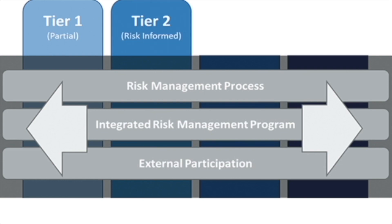Tier 2 is called risk-informed. In that tier, management approves the risk management practices, but there may not be an organization-wide policy. There is awareness of cybersecurity risk at the organization level, but an organization-wide approach has not been established. The organization understands the broader ecosystem of risk but has not formalized any practices to deal with it.